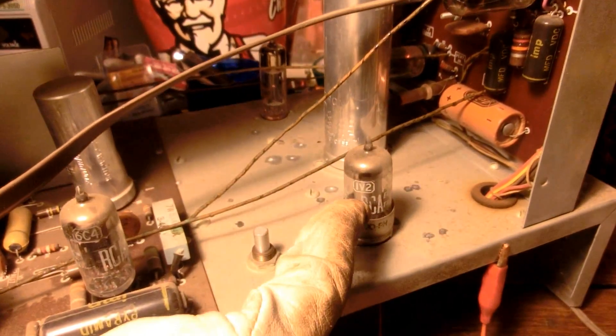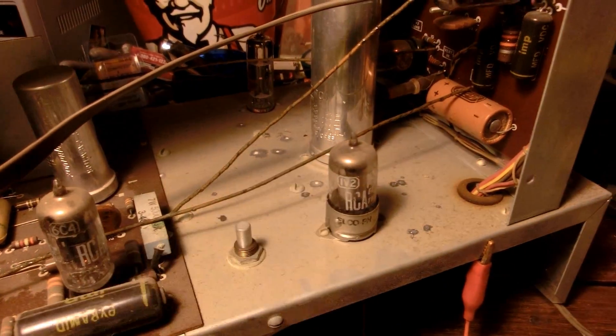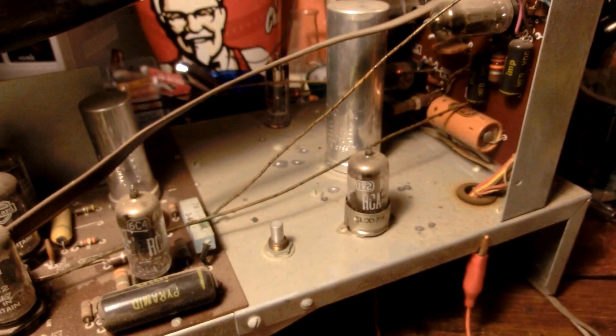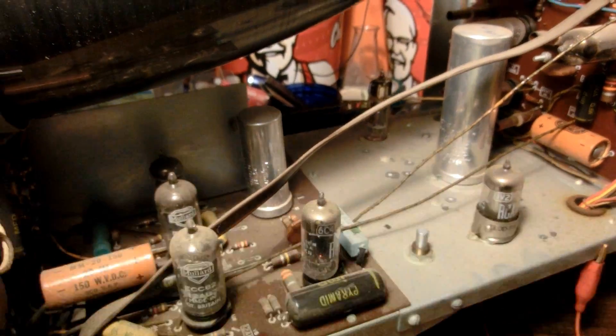So all the tubes are working except for that one, the 1V2. But I could probably replace that with just a simple diode, because that's all it is is just a little half-wave rectifier, a.k.a. a diode.